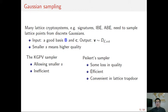Compared with the KGPV sampler, Peikert's algorithm has some quality loss, but it is more efficient. In addition, Peikert's sampler turns out convenient in the trapdoor setting. In this work, we focus on Peikert's sampler.